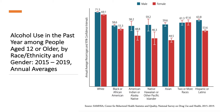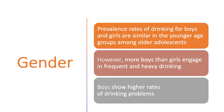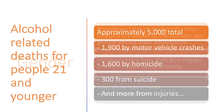Alcohol use in the past year for folks aged 12 or older by race, ethnicity, and gender shows that males are denoted in blue and females in red; data are annual averages collected between 2015 and 2019. Prevalence rates of drinking for boys and girls are similar in younger age groups. However, among older adolescents, more boys than girls engage in frequent and heavy drinking, and boys show higher rates of drinking problems.